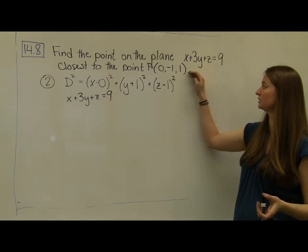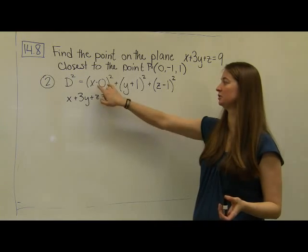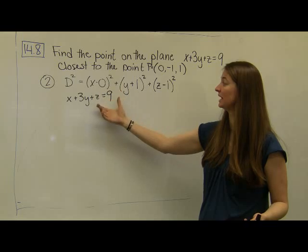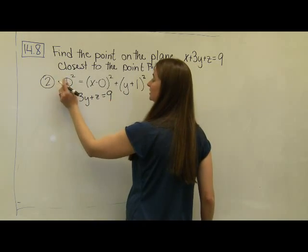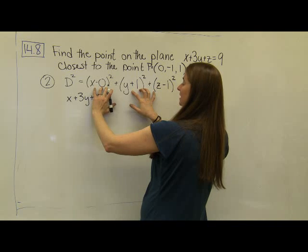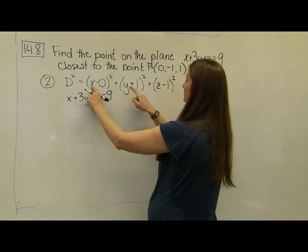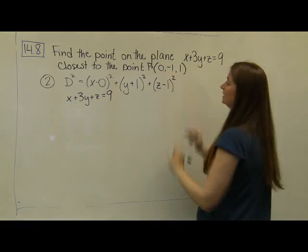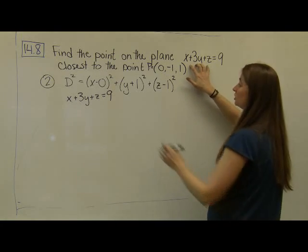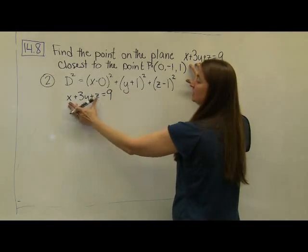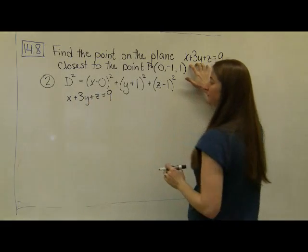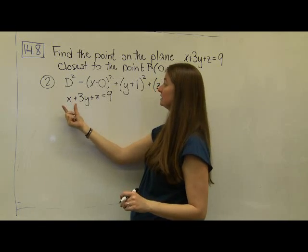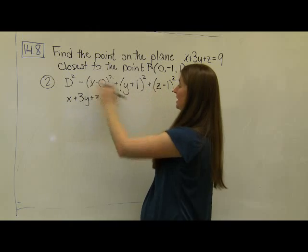Now we're going to solve the same problem through direct substitution, and you can decide which method you prefer. We have the same distance squared function as before — the function we want to minimize representing the distance from point x, y, z to point P at 0, negative 1, 1 — subject to the constraint that x, y, z lives on the plane. For substitution, I solve for one variable in the constraint and substitute it back into the function I want to minimize.